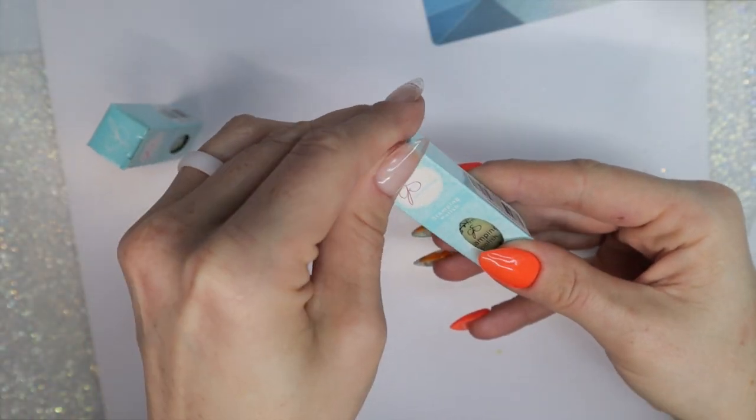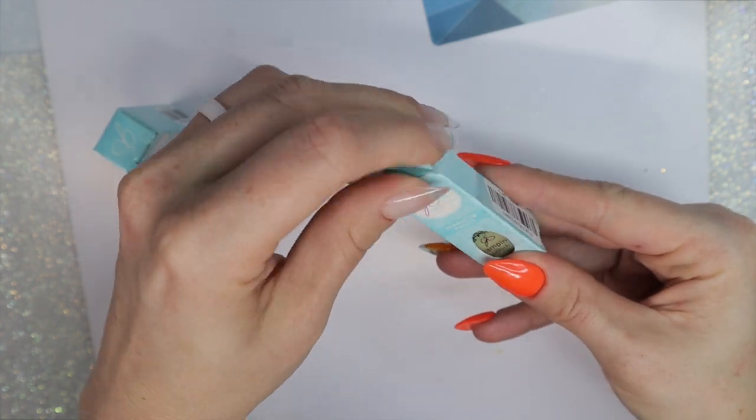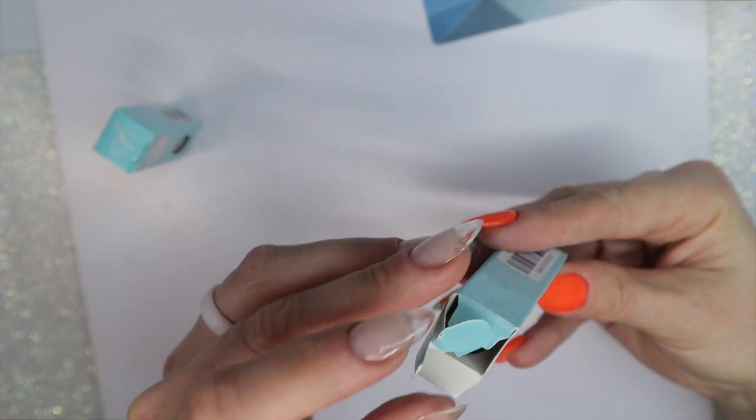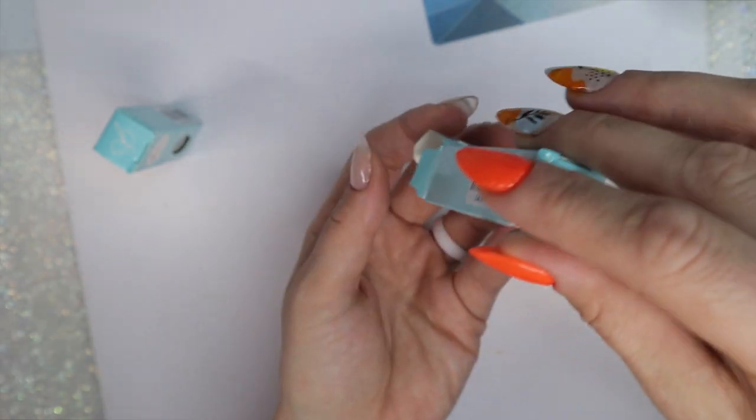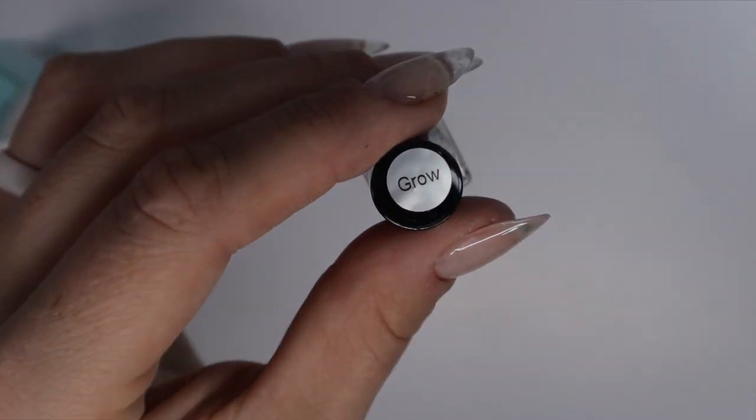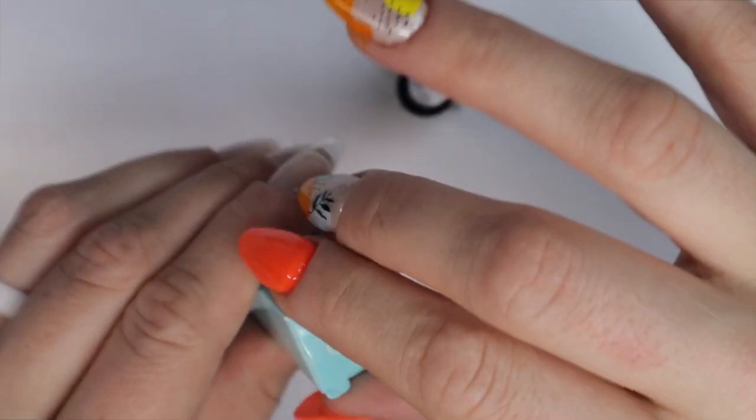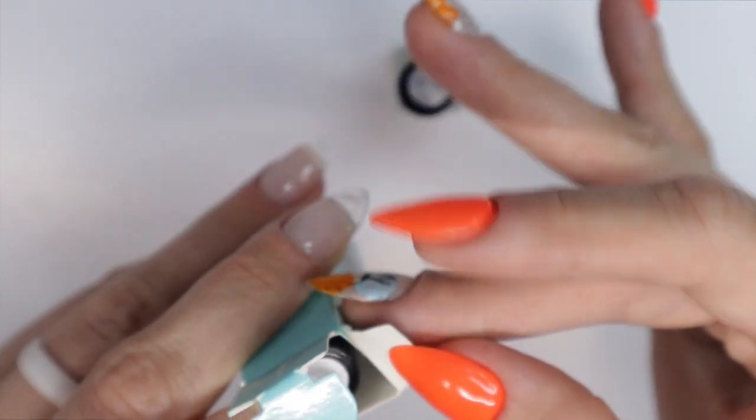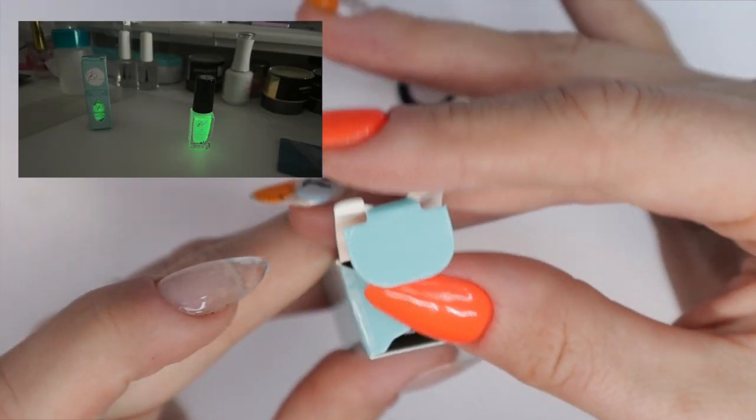I want to show you guys two new things that are on the Clear Jelly Stamper website that I ordered with the stamping plates I brought up in the beginning of this video. These are glow stamping polishes. This was sold as a two-pack and it's funny, it doesn't say glow for some reason, it says grow, so I guess there was a typo there. But they are glow stamping polishes—trust me, I'll show you a photo of them glowing on my desk in the middle of the day.